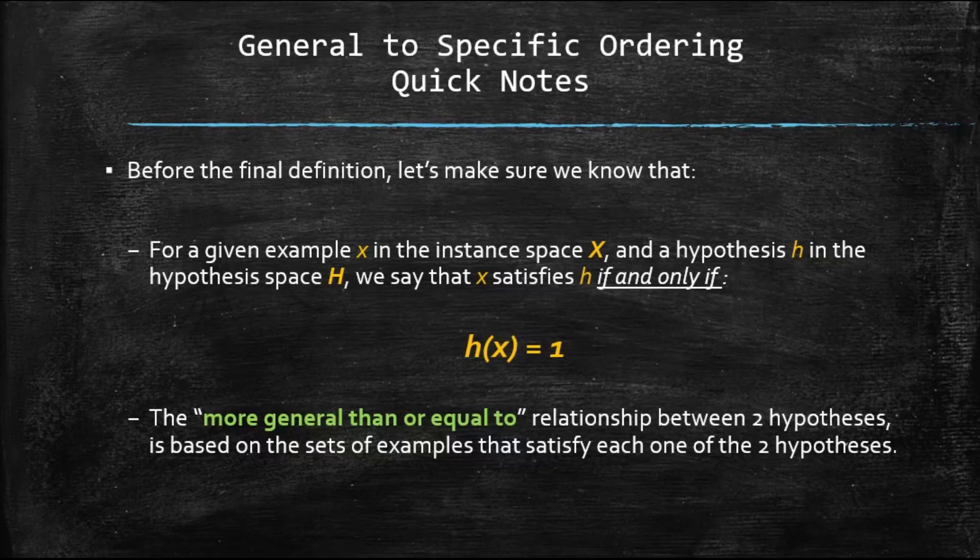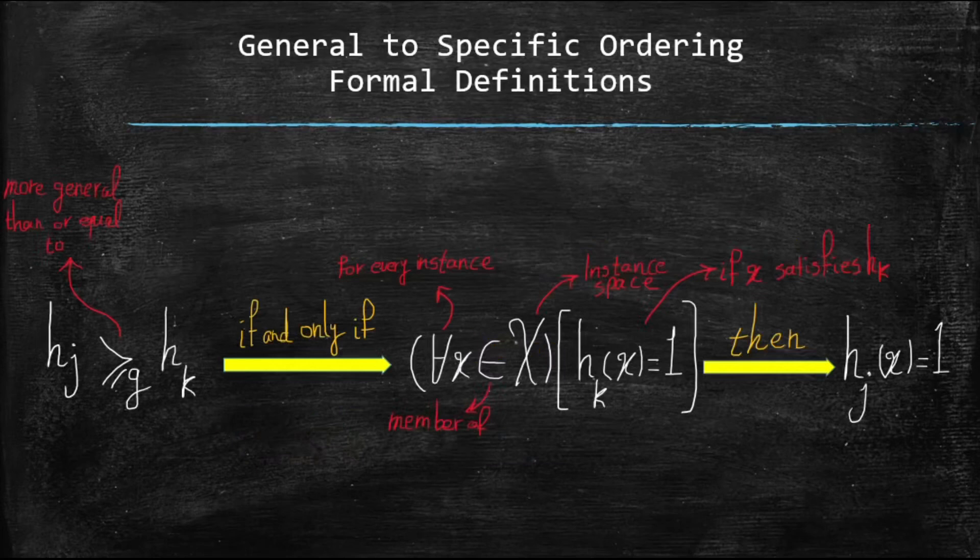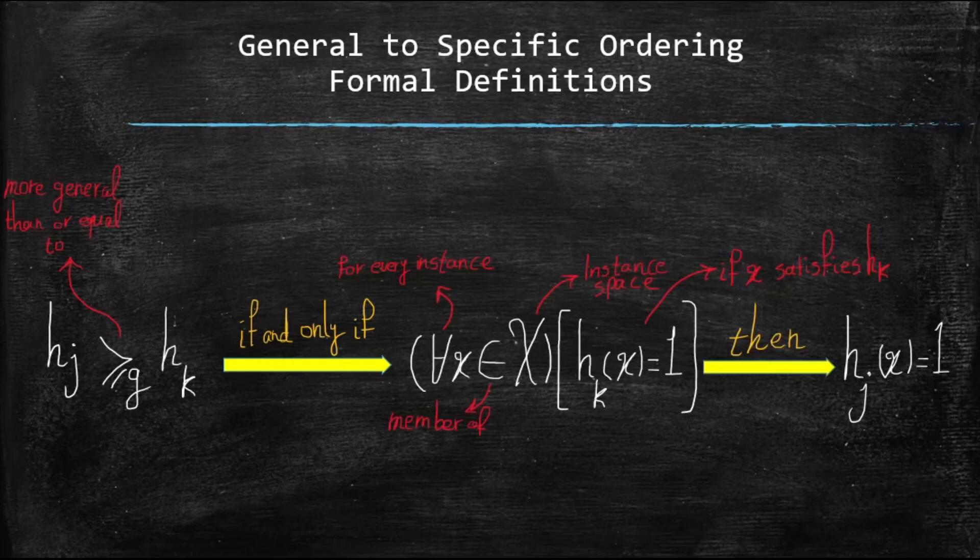Let's dig into a more technical and academic introduction. Consider you've got h of j, one hypothesis, and h of k, the other hypothesis. And capital X is always your instance space. And this notation over here means that hypothesis j is more general than or equal to hypothesis k. More general than or equal to is that notation. We can say that about h of j if and only if, for all the examples in your instance space, if all of them that can satisfy h of k can also satisfy h of j, then we can say that h of j is more general than or equal to h of k.